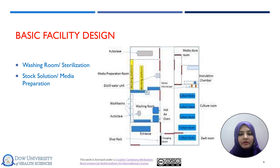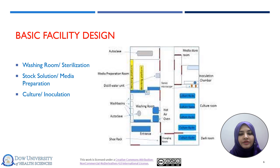A microwave oven, water dispenser, and distillation unit can also be provided in that facility. Another part of the basic facility design is the culture room or inoculation room. Here, the most important instrument is the laminar flow cabinet. The laminar flow cabinet with a HEPA filter keeps the air clean without any contamination. All explants are transferred and placed in the artificial medium under the LFC under proper sterilization conditions. All areas should be properly sealed, and all cultures can be transferred in the inoculation room.